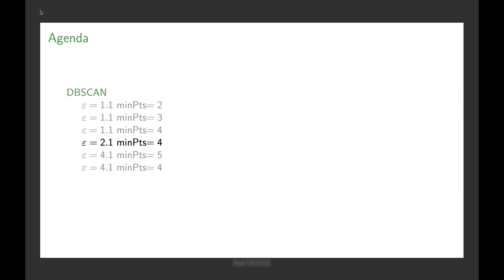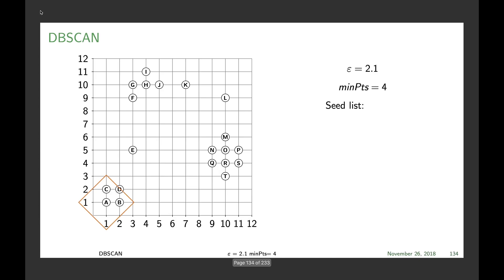And then we increase our epsilon range to 2.1 and minPts 4. So we add B, C, and D to our seed list and then just continue with those. All of them being core points, E still being a noise point.